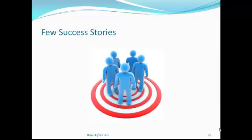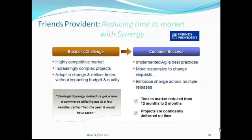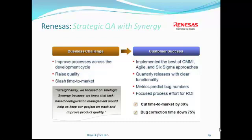Let's look at a few success stories. Friends Provident operates in a highly competitive market where they build quite complex projects. Due to rapid changes in customer requirements, their development team was suffering from incorporating all those changes quickly and accurately. Rational Synergy helped them to adopt agile-based practices and embrace changes across multiple releases, due to which they are now able to reduce time to market from 12 months to 2 months. Also, Rational Synergy helped Renesys to cut their time to market by up to 30%, and helped these organizations reduce bug correction time due to early bug identification in the development phase.